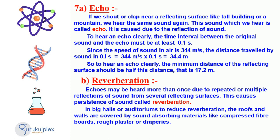Reverberation occurs when sound is repeatedly reflected off of multiple surfaces. It is commonly heard in large halls and auditoriums. To reduce reverberation, roofs and walls are often covered with sound-absorbing materials like compressed fiber boards, rough plaster, or draperies.